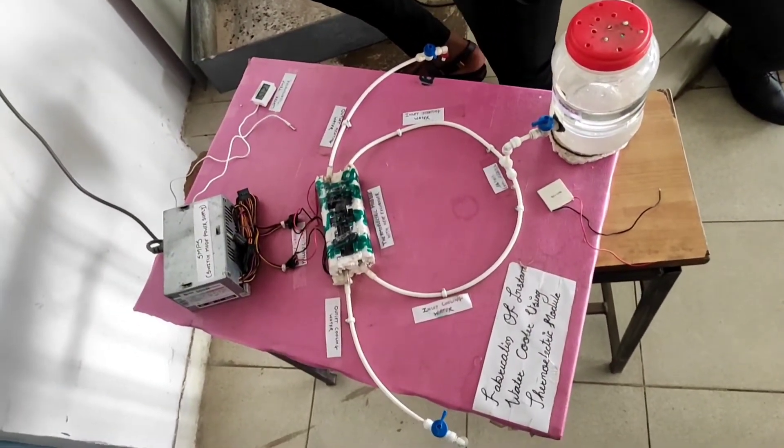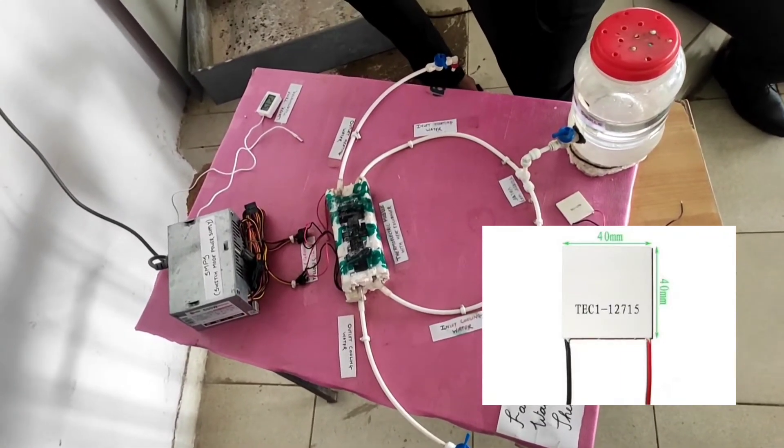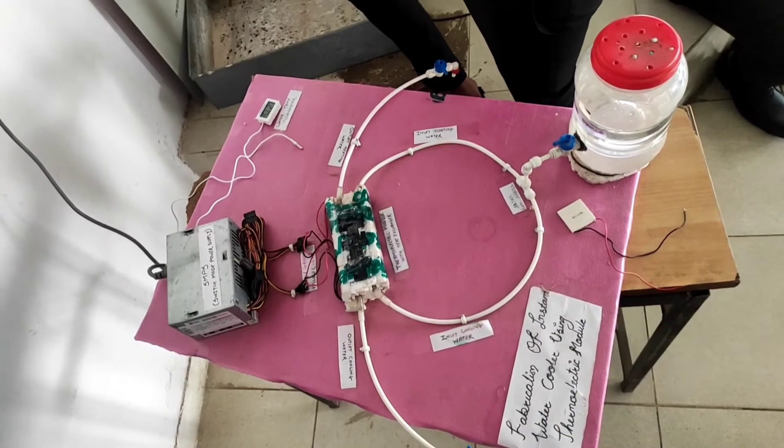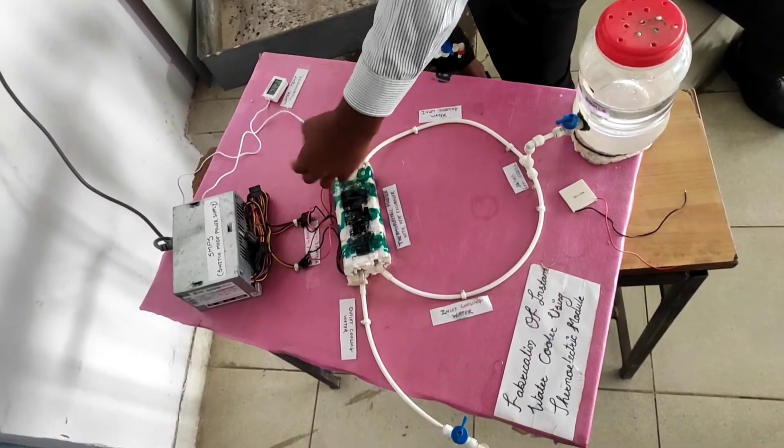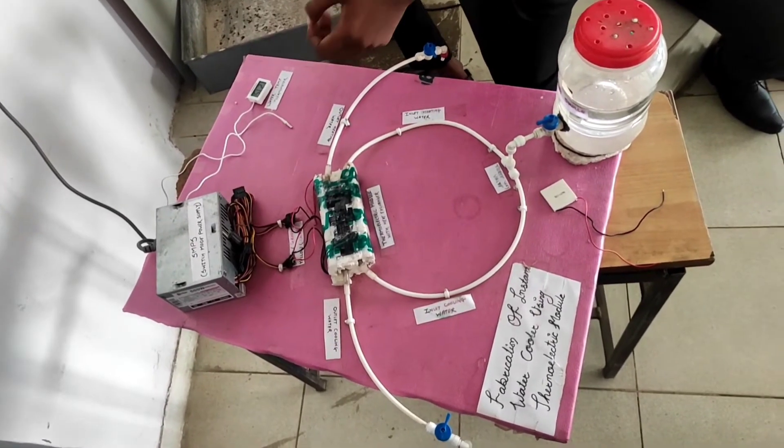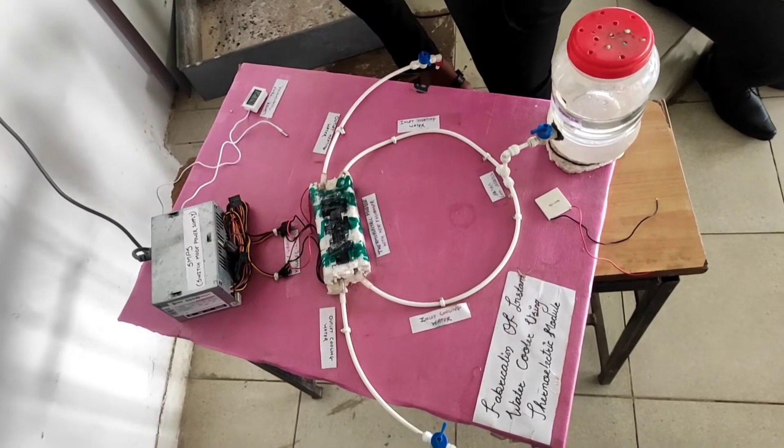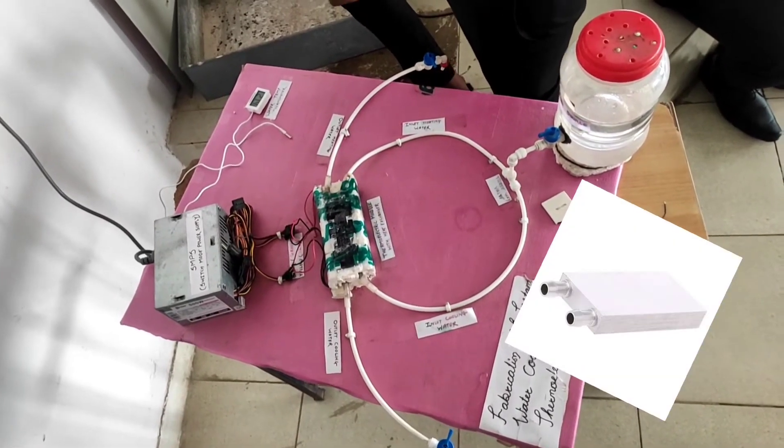After getting power, the modules can create temperature difference on both sides. And that results, the upper side gets cold and the down side will get hot. On the above side of series, we connect heat sink means water cooling blocks.